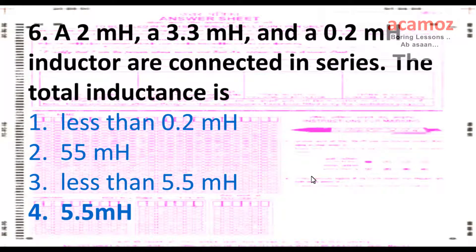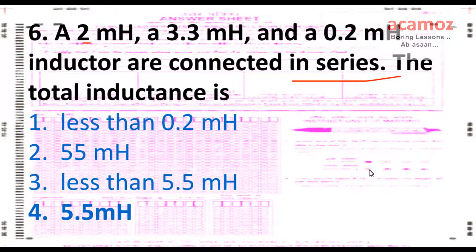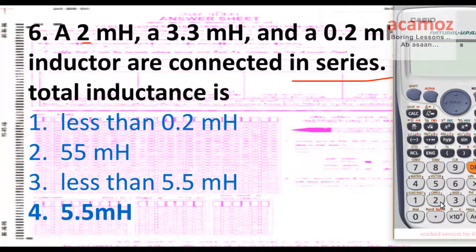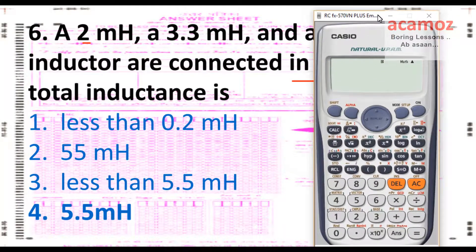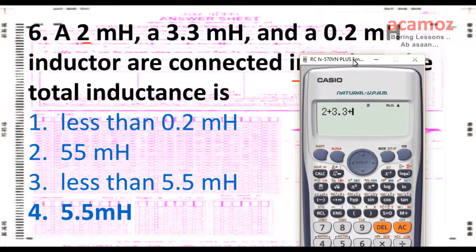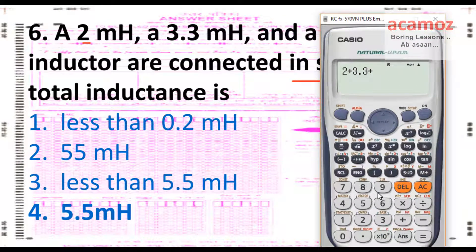For 2 mH, 3.3 mH, and 0.2 mH inductors connected in series, the total inductance is the sum: 2 + 3.3 + 0.2 = 5.5 mH. The answer is 5.5 mH.